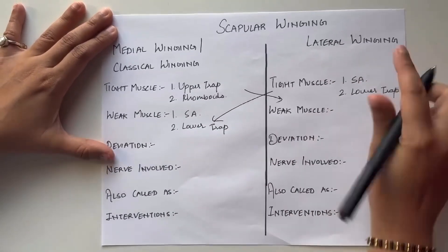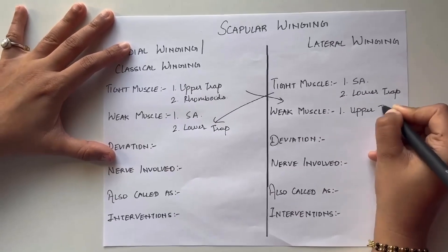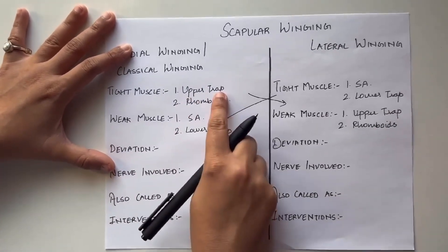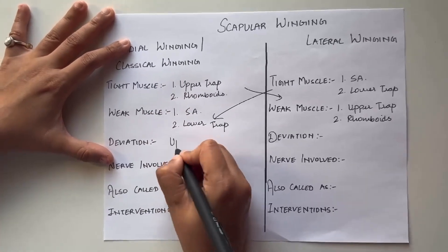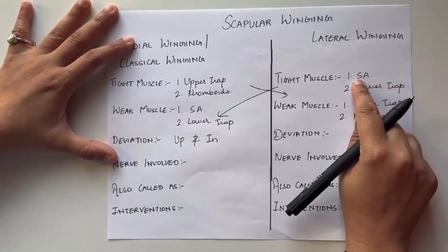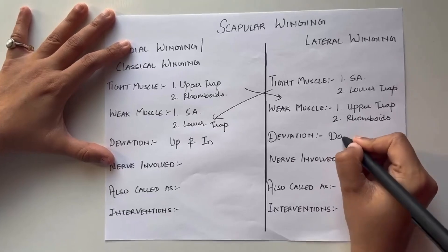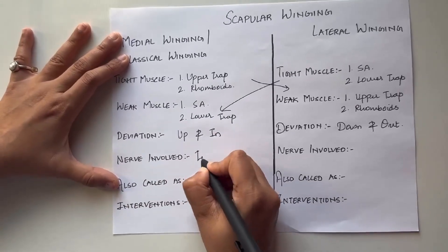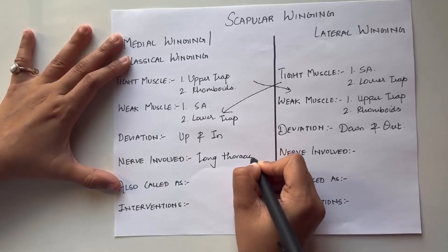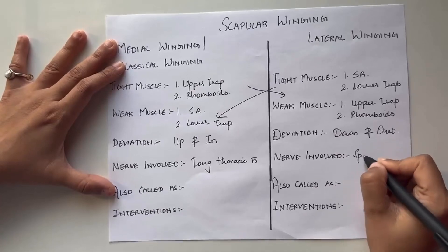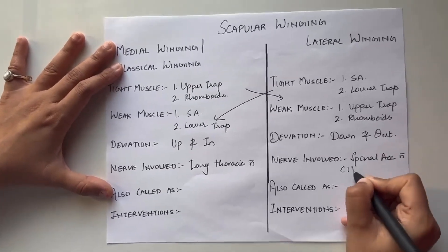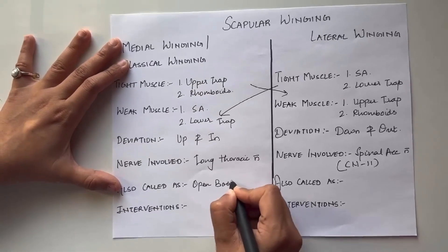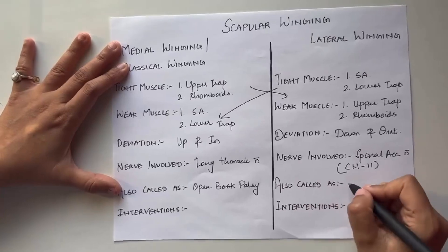The weak muscles for lateral winging are the upper trap and the rhomboids. Since the upper traps and rhomboids are tight in medial winging, the deviation of the scapula would be up and in. For lateral winging, since the serratus anterior and lower traps are tight, the deviation would be down and out. The nerve involved in medial winging is the long thoracic nerve, while for lateral winging it is the spinal accessory nerve, also known as cranial nerve 11. Medial winging is also called open book palsy, and lateral winging is called sliding door palsy.